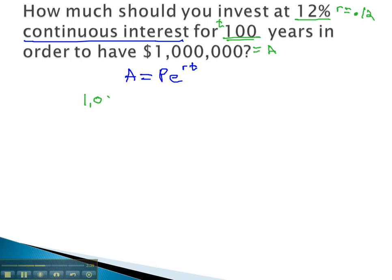Using 1,000,000 for A equals P e to the r, which is .12, times the time, which is 100 years.